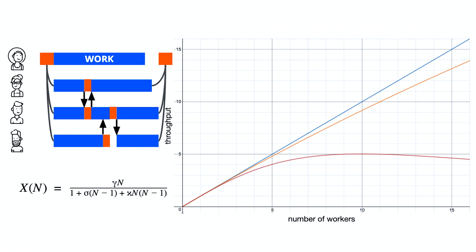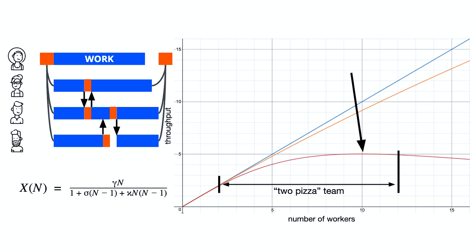Accounting for the coherence aspect of the system, we end up with the universal scalability law. We add to the denominator the component kappa, which represents the percentage of work due to this crosstalk and coordination on top of contention. With kappa set as low as 1% (0.01), we already see the point of diminishing returns. This graph depicts work with 1% contention and 1% coordination, where 10 workers is the point after which we get diminishing returns. For context, five minutes of an eight-hour workday is 1%.